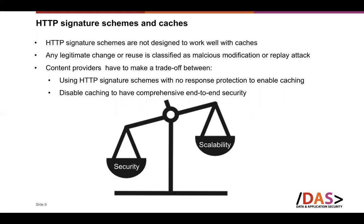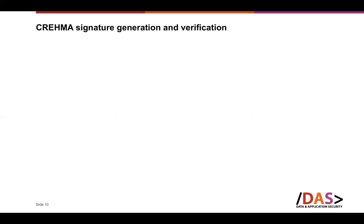This is a big problem for content providers who want to use both signature schemes and caches. If they want end-to-end security with signature schemes, they have to disable caching. If they want caching, they have to disable end-to-end security schemes. This conflict is not solved by current signature schemes, and this is why we developed our idea, CREMA, which brings security and scalability into alignment.